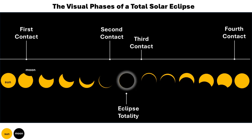Totality, the most captivating phase, is where the moon completely obscures the sun's disk, revealing only the ethereal solar corona. Third contact follows as the eclipse progresses — the first glimpse of sunlight reemerges, marking the moment when the moon's shadow begins to move away from the observer.